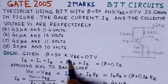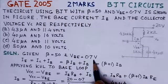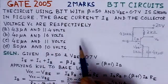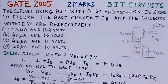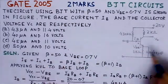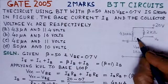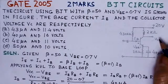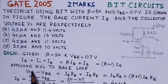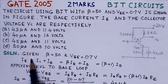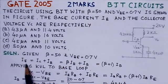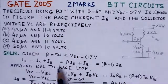In the given problem, we have beta as 50 and VBE of 0.7 volts, and we are required to find the value for the base current IB and the collector voltage VC. The emitter current can be written as the sum of the collector current and the base current.